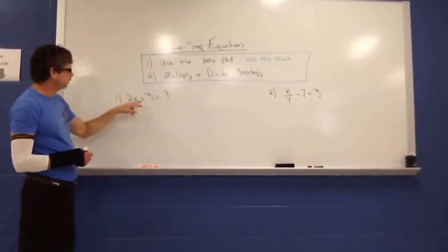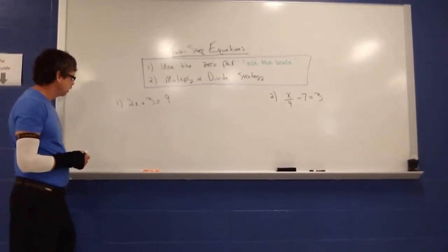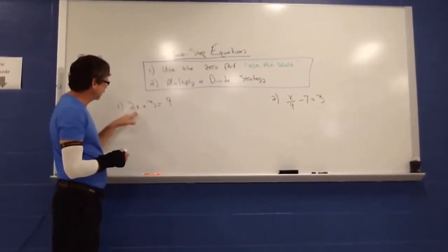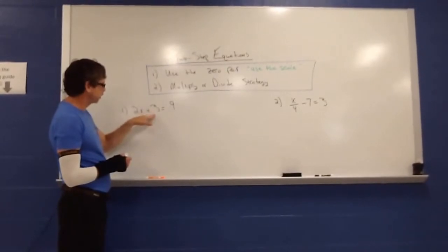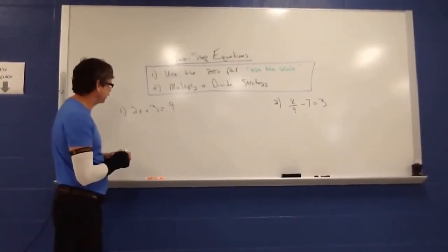So for the first example, we have 2x plus 3 is equal to 9. What we want to do is try to get the x by itself. To do so, what we want to do is focus on the zero pair part. So we want to get rid of this negative 3.